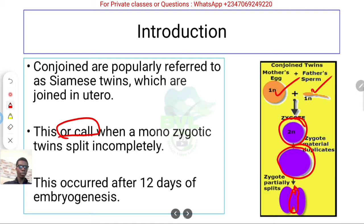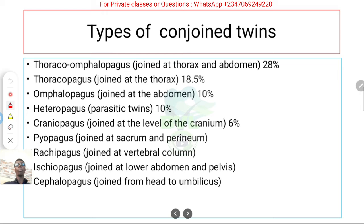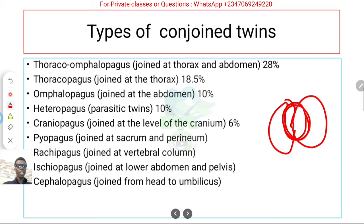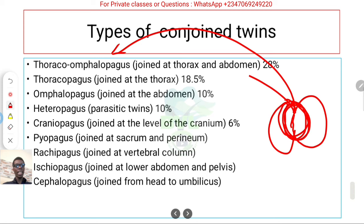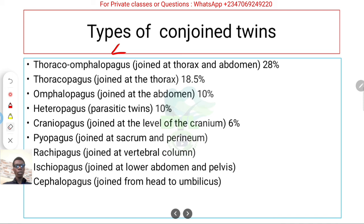There are different types of conjoined twins based on the part of the body that remains joined. When the zygote doesn't completely split, the part that stays held together during embryogenesis is what defines the type. For example, thoracopagus refers to twins joined at the thoracic and abdominal region, while thoracopagus can also refer to the chest only. You can see the incidence percentages for each type.